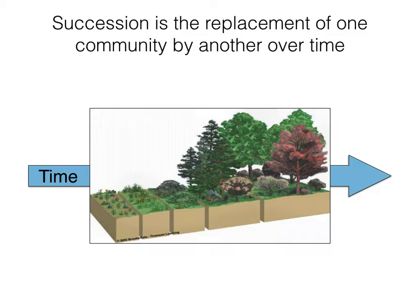Succession is the replacement of one community by another over time. By community, of course, we're talking about an ecological assemblage of species in a particular area. This graphic shows, for example, an open field that was cleared — perhaps on the East Coast after being cleared for agriculture — and was allowed to return to the previous mixed deciduous forest. Over time, you begin with smaller plants, followed by shorter-lived plants initially and longer-lived plants later. Eventually shrubs and small trees move in, followed by longer-lived trees.